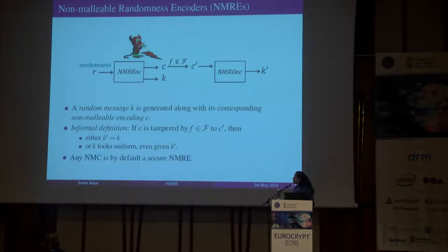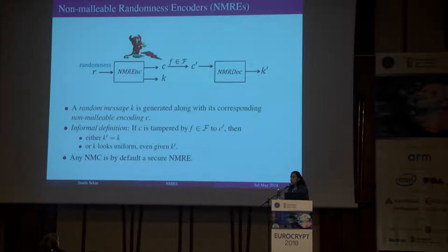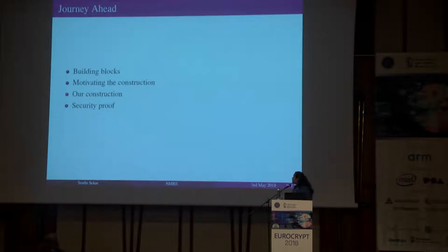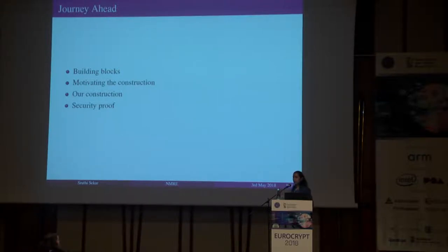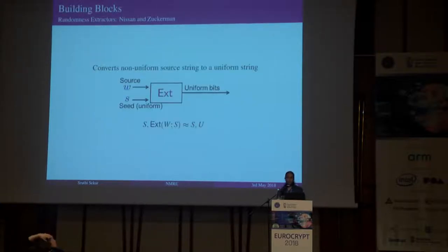The first natural observation is that any non-malleable code would by default give you an NMRE, but that does not give us anything better in terms of rate. Our goal in introducing NMREs was to get a better rate. Before getting into the construction, there are three building blocks required.